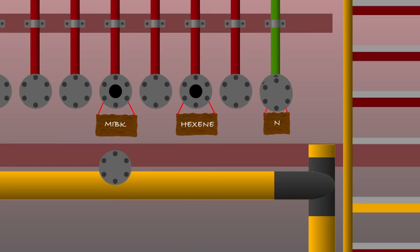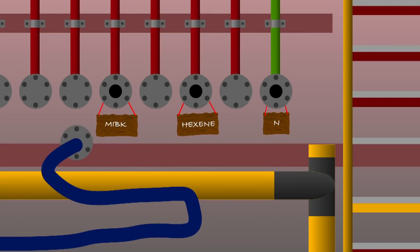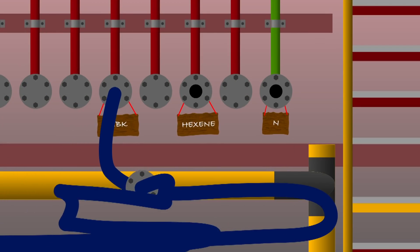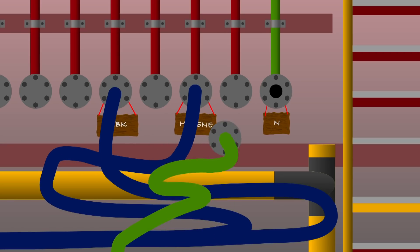Anyway, to discharge its cargo, Fair Chem Philly connected up three lines to the shore. An MIBK cargo line, a liquid hexine cargo line and a nitrogen line.